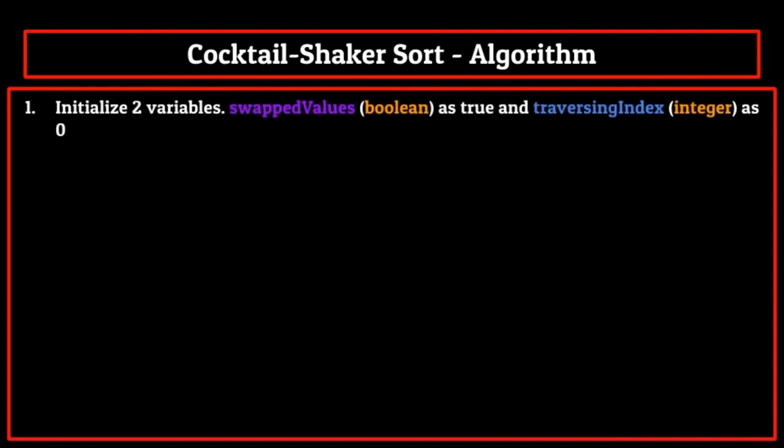Step 1 for cocktail shaker sort is going to be exactly the same as step 1 was for bubble sort. We define two variables: a swapped values boolean and a traversing index integer. The swapped values boolean helps us determine when the list is sorted, and the traversing index helps us traverse through our list. We initialize these to true and zero respectively, which prepares them for the first pass through the list.